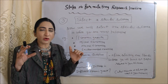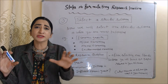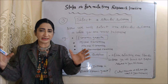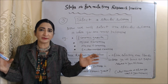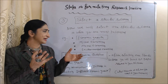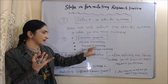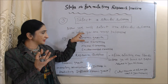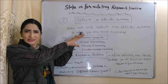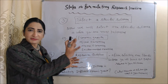The next step is to select a specific sub-area. Now you will select one specific sub-area in which you are most interested — for example, economic growth.